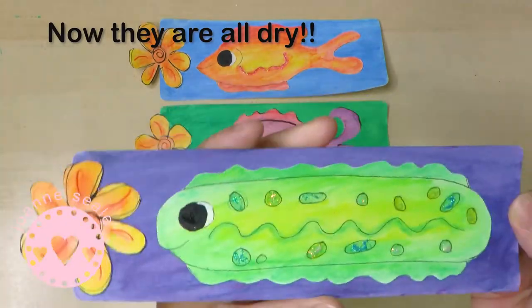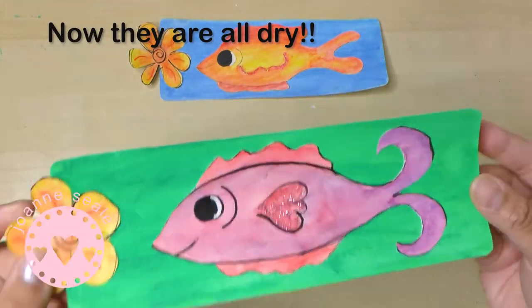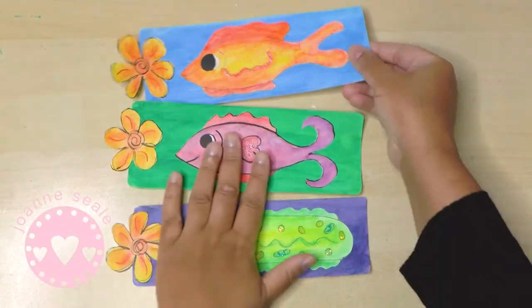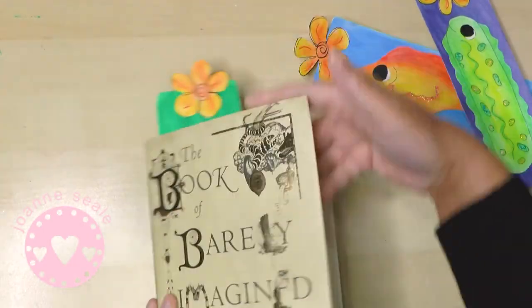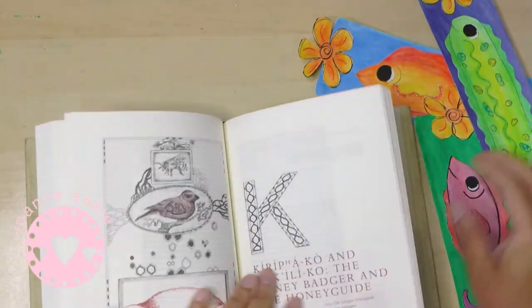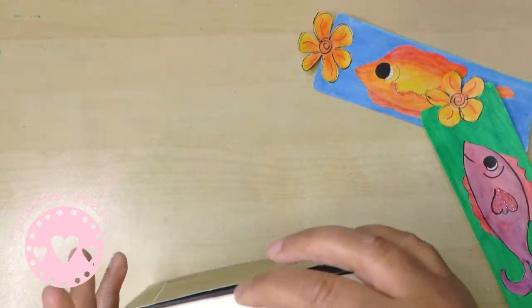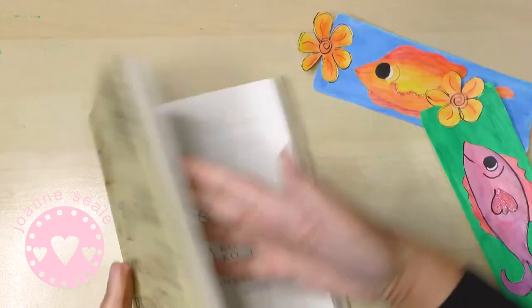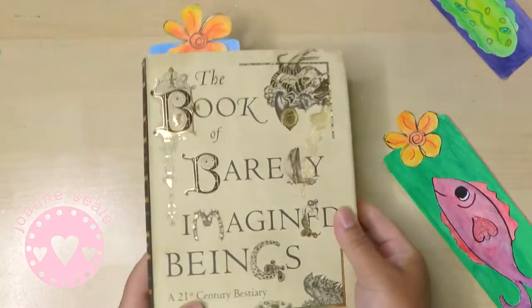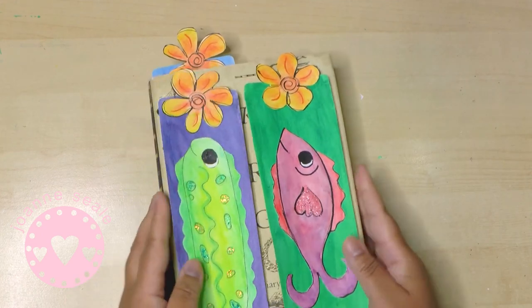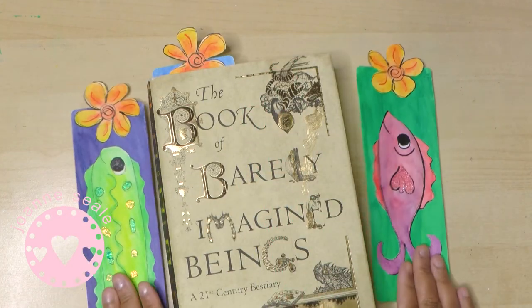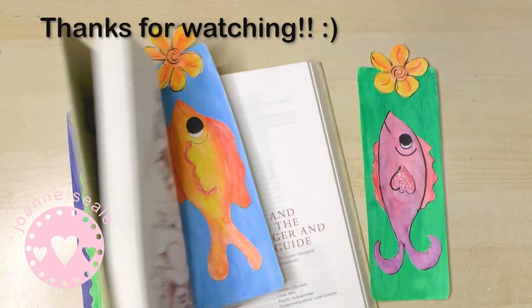Congratulations, yeah, they're all dry and shiny and cute. So now you can use them as your bookmark and I think they look great. I got this book, I went to the Horniman Museum in London and the author was giving a talk. It's a book all about strange animals in the world. So I hope you've enjoyed this tutorial and thanks for watching.